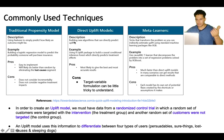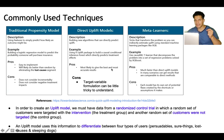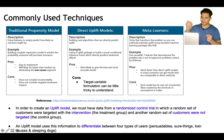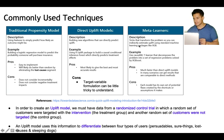There are also direct uplift models which can directly detect the uplift due to the treatment. And there are meta learners. Direct uplift models build a new algorithm that can directly predict uplift — some are available in R and other libraries. Pros: most likely to give the best and accurate result. Cons: since we are directly detecting uplift, the target variable formulation can be a little tricky.